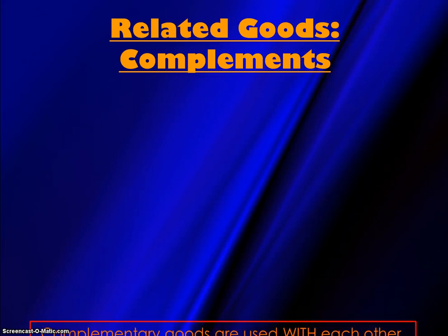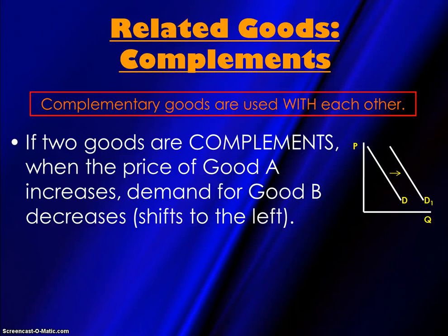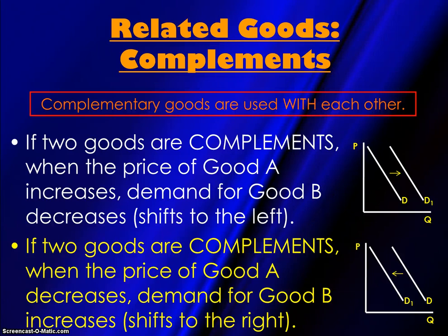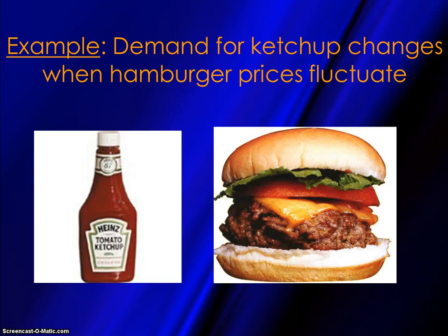Complementary goods are things that are used together. If two goods are complements, then if the price of one increases, demand for the other will actually decrease, and vice versa. For example, demand for ketchup will fluctuate if hamburger prices fluctuate because these things are used together. Let's say mad cow disease sweeps the nation and we have a shortage of beef, so beef prices go up and hamburgers are more expensive. Therefore, demand for ketchup will decrease because fewer people are buying hamburgers, so fewer people need to purchase ketchup. There was a price change in hamburgers — a movement along the demand curve for hamburgers — but there is a shift in demand for ketchup, so the demand curve for ketchup will actually shift to the left.